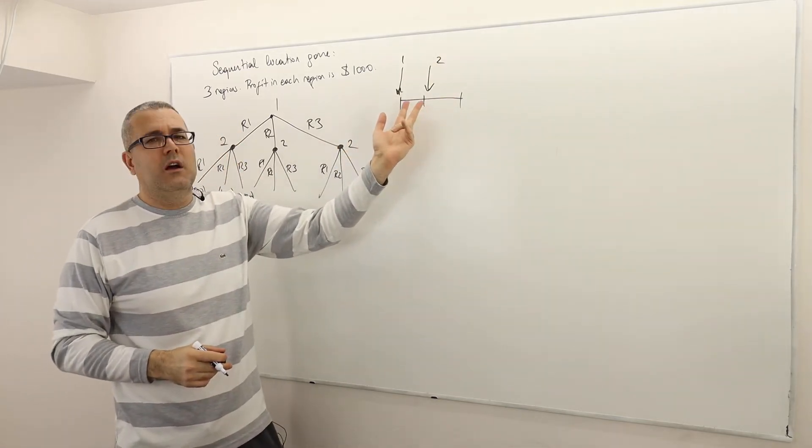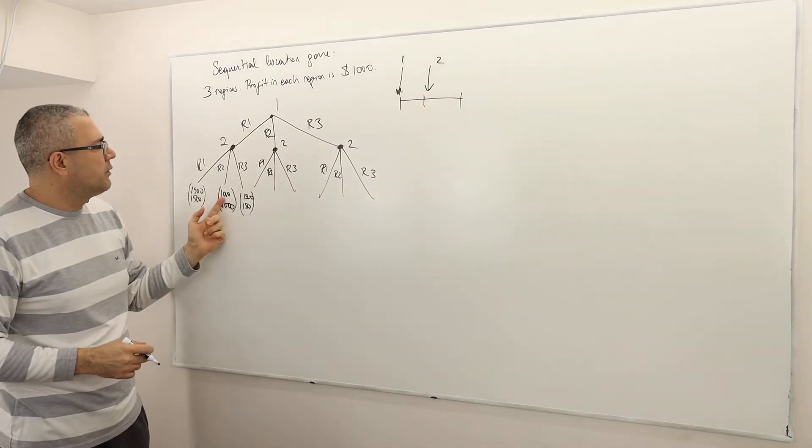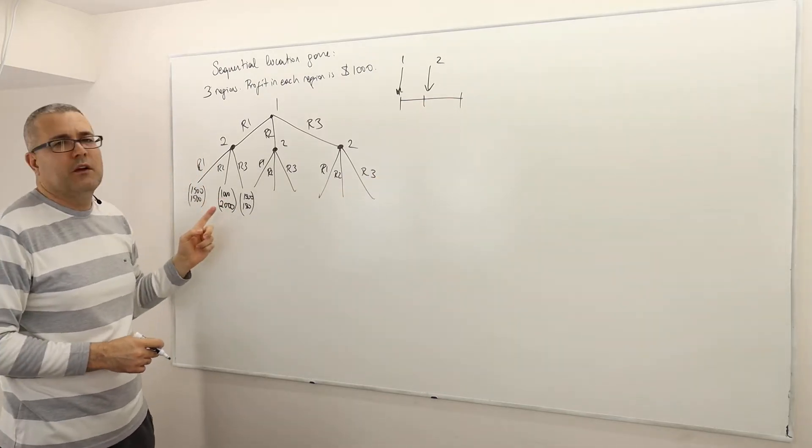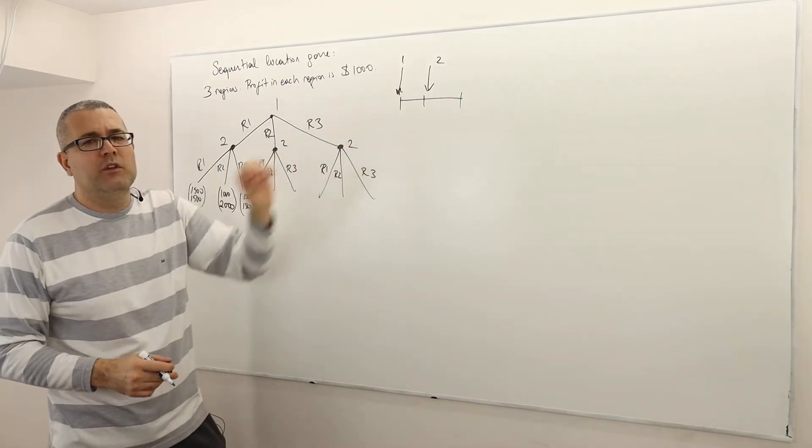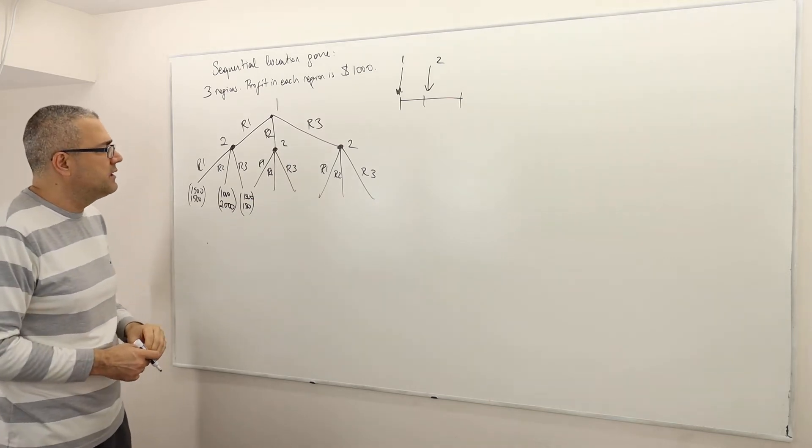So what that means, firm two is going to serve region two and three, and so $2,000 profit, but player one is going to receive only $1,000 profit, because it can serve only in region one, and so on. So you can fill out the rest of the payoffs easily.